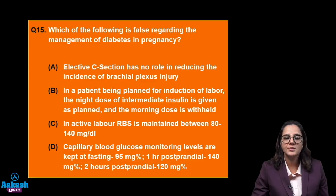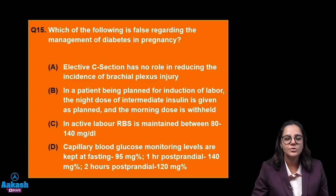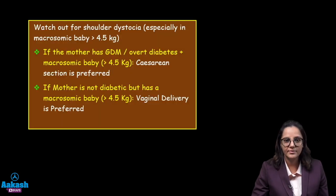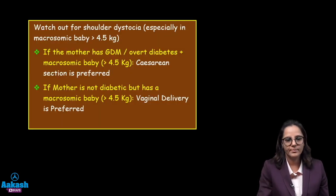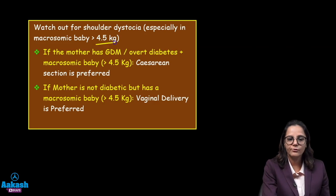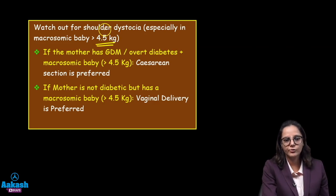Which of the following is false regarding the management of diabetes in pregnancy? Let's go through the salient features first. In diabetes, if there is a macrosomic baby more than 4.5 kg, what do we have to look for? Shoulder dystocia.